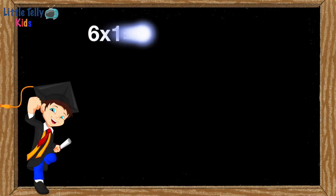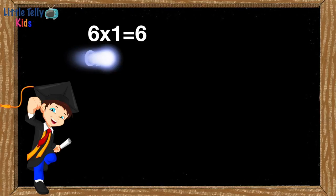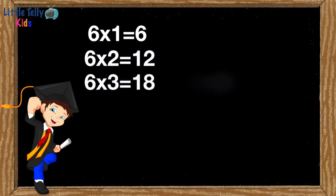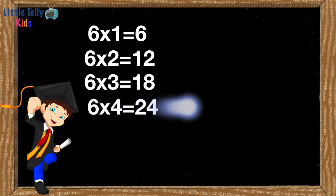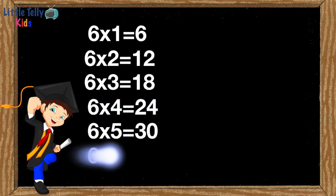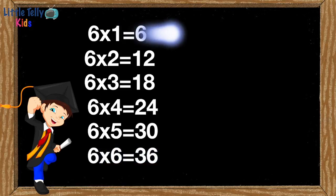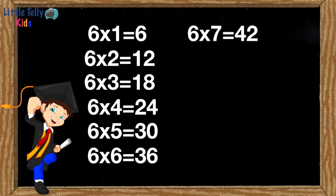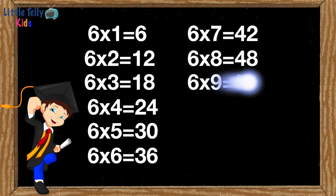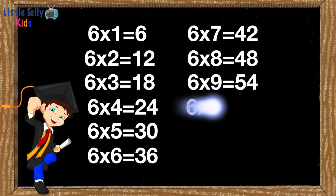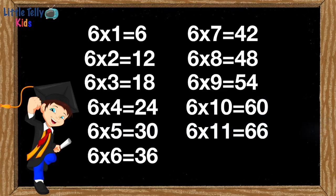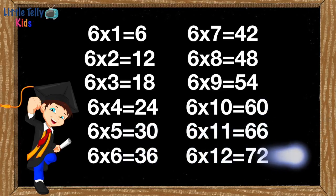6 ones are 6, 6 twos are 12, 6 threes are 18, 6 fours are 24, 6 fives are 30, 6 sixes are 36, 6 sevens are 42, 6 eights are 48, 6 nines are 54, 6 tens are 60, 6 elevens are 66, 6 twelves are 72.